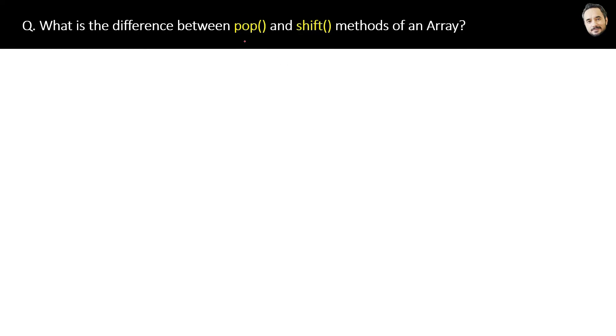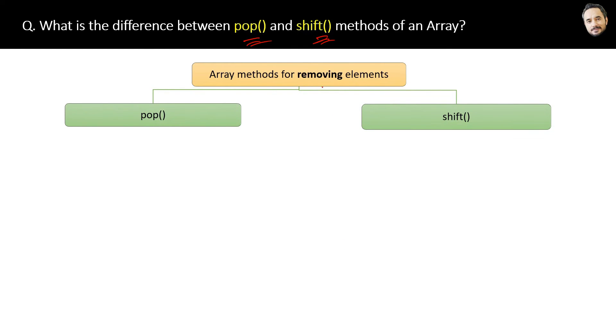What is the difference between the pop and the shift methods of an array? Both these pop and shift methods are used to remove elements from the array. Let's start with pop.